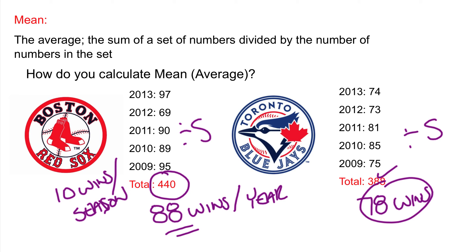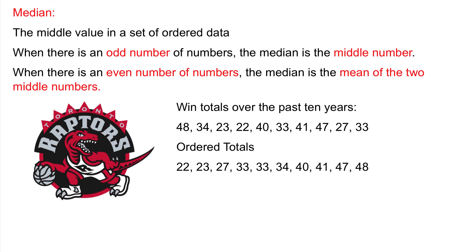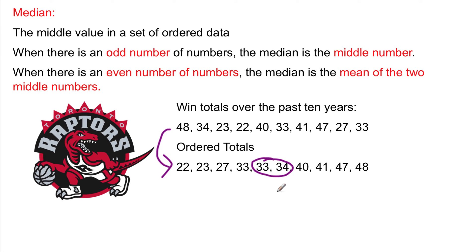Next, we're going to keep the Toronto theme going. The median is the middle value in a set of ordered data. When there's an odd number of values, the median is the middle number. When there is an even number of numbers — 10, 12, 14 — the median is the mean of the two middle numbers. Here are the win totals for your Toronto Raptors over the past 10 years. Your first step is to order these numbers from least to greatest. We have 10 numbers here, so the median is these two middle numbers: 33 and 34.